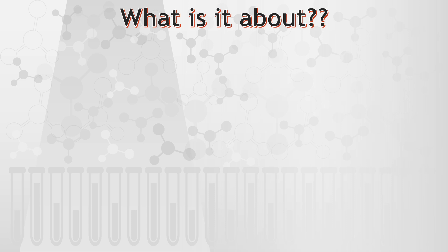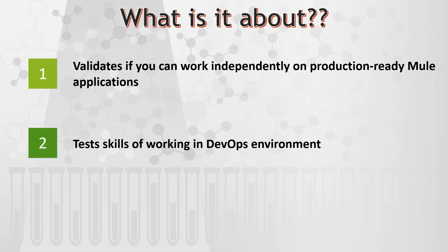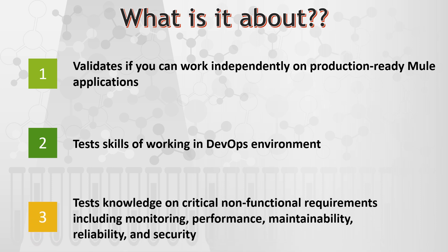Level 2 is very different from the Level 1 exam. Level 1 was more focused on introducing Anypoint Platform, its components, connectors, Anypoint Exchange, and deploying applications on CloudHub. Level 2 is the next step — it validates whether you can work independently on production Mule applications. It is aligned to the DevOps way of working, which is the focus across the IT industry. Finally, it deals with non-functional requirements, which were never discussed in Level 1.